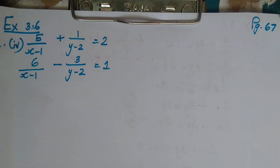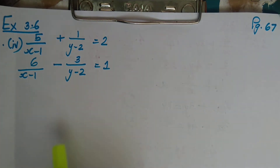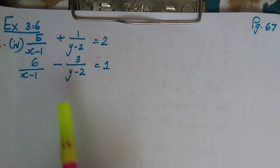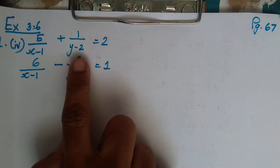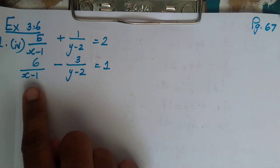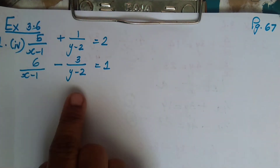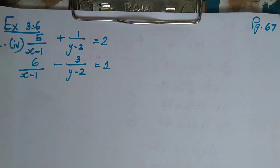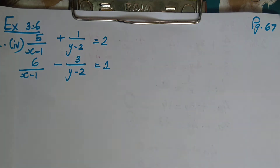Page number 67, question 1(iv). The equations are: 5/(x-1) + 1/(y-2) = 2, and 6/(x-1) - 3/(y-2) = 1. If you see here, they are not in linear form because x and y appear in the denominator. So I have to do some substitution and bring them to the numerator.